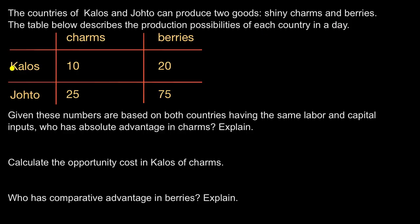Kalos, if it puts all of its energy behind charms, could produce 10 charms in a day. But if it put all its energy behind berries, it could produce 20 berries in a day. Johto, putting all its energy behind charms, produces 25; all its energy behind berries, 75.